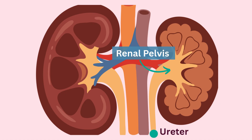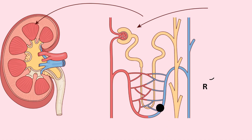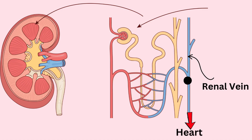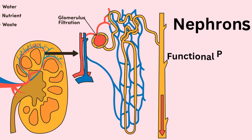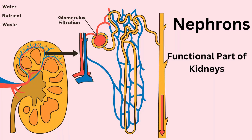The filtered blood travels through the renal vein and then back to the heart. But the real magic happens in over a million tiny units called nephrons, the functional part of the kidney.